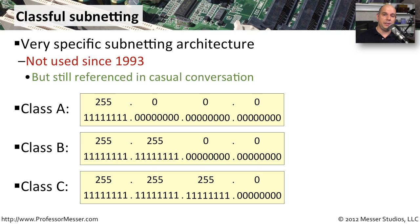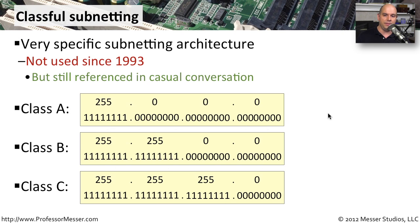There's a historical concept in TCP/IP called a classful subnet. Class A subnet masks are 255.0.0.0, Class B would be 255.255.0.0, and Class C would be 255.255.255.0. We haven't used classful-based subnetting since 1993, but we still refer to it in common conversation — saying a subnet has a Class B is much faster than saying it uses a mask of 255.255.0.0.